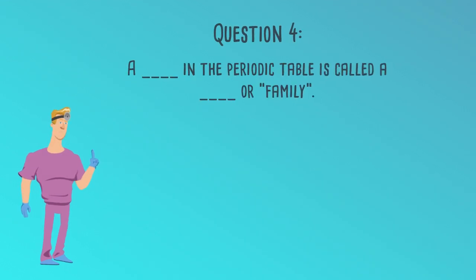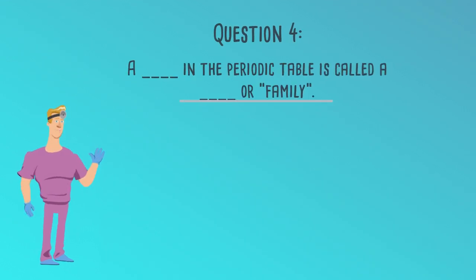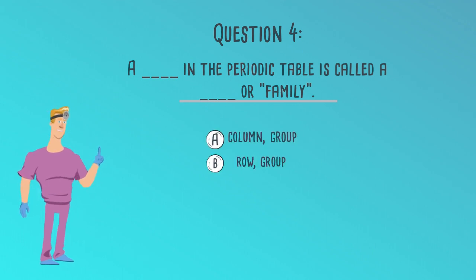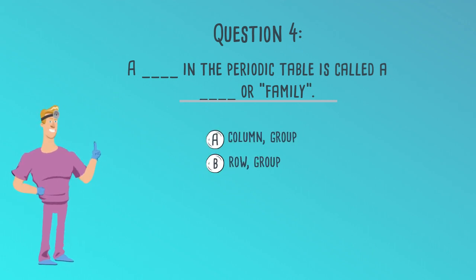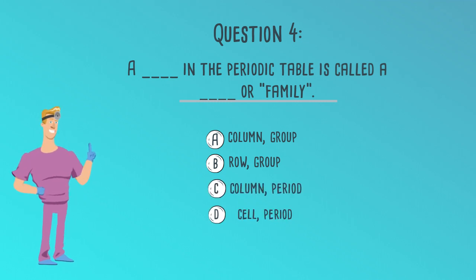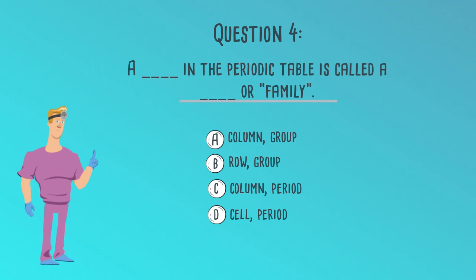Question 4. A blank in the periodic table is called a blank or family. A. Column, Group. B. Row, Group. C. Column, Period. Or D. Cell, Period.